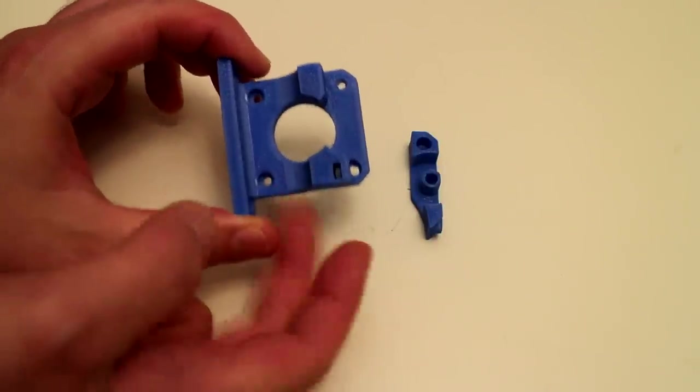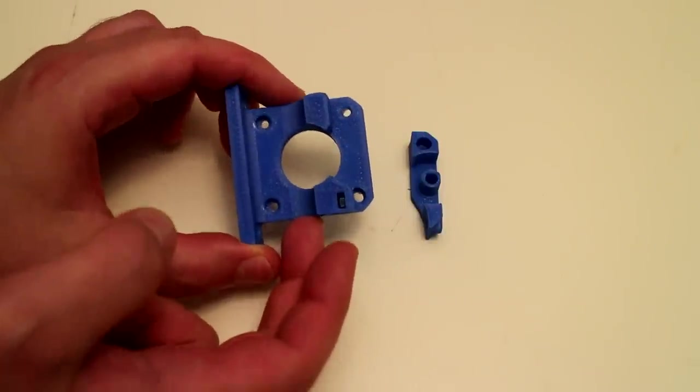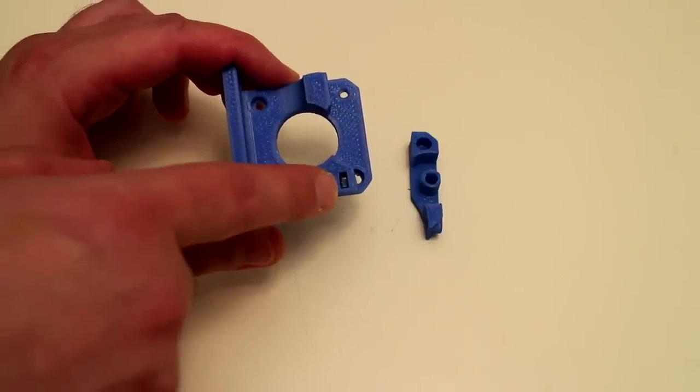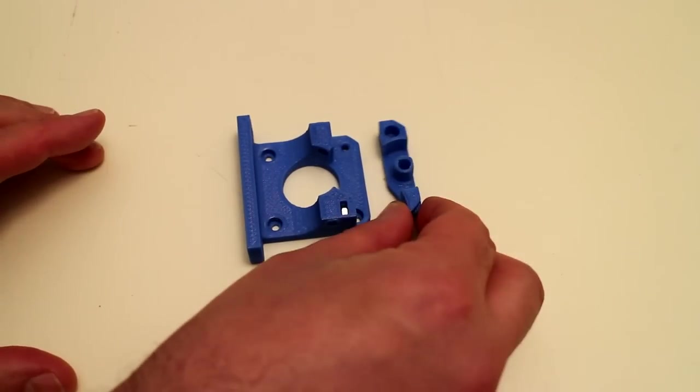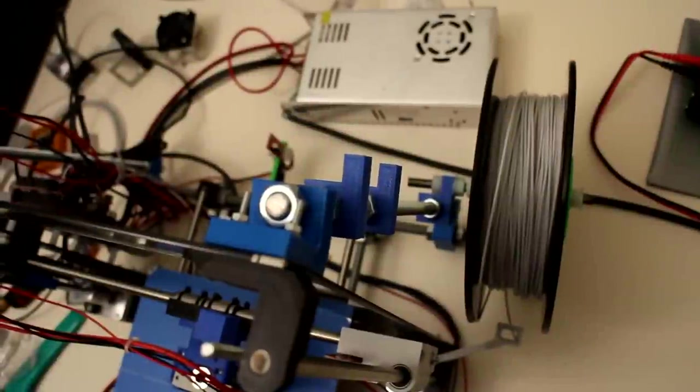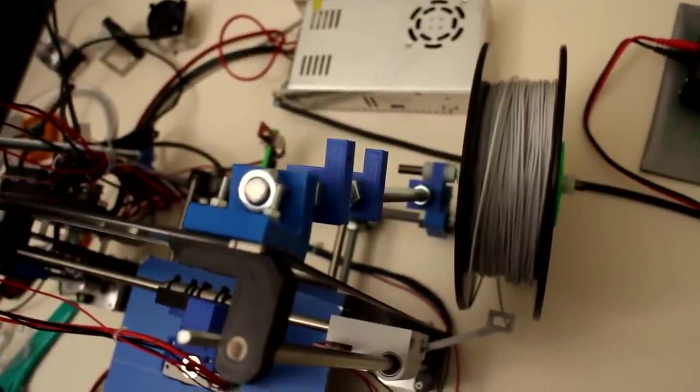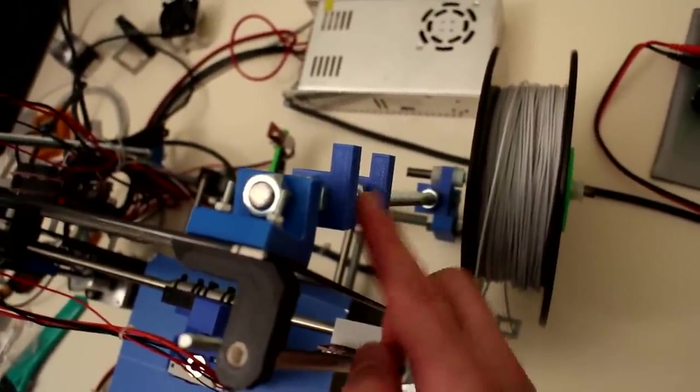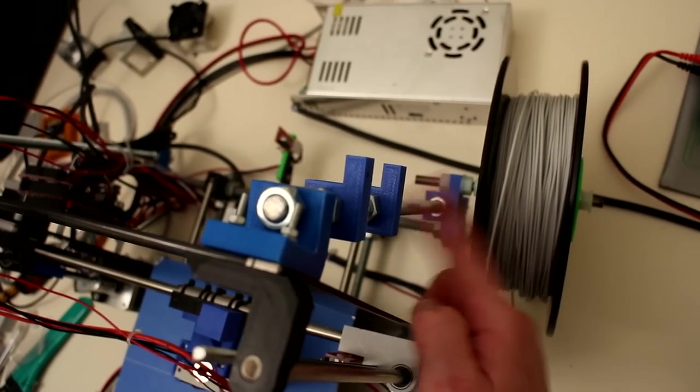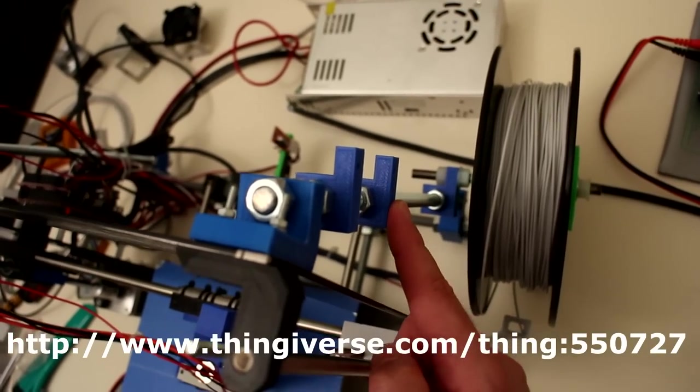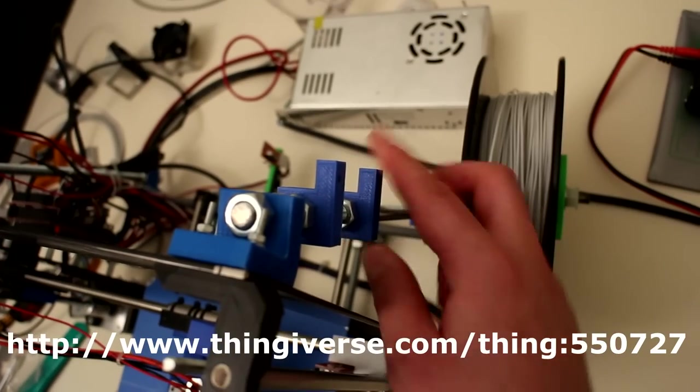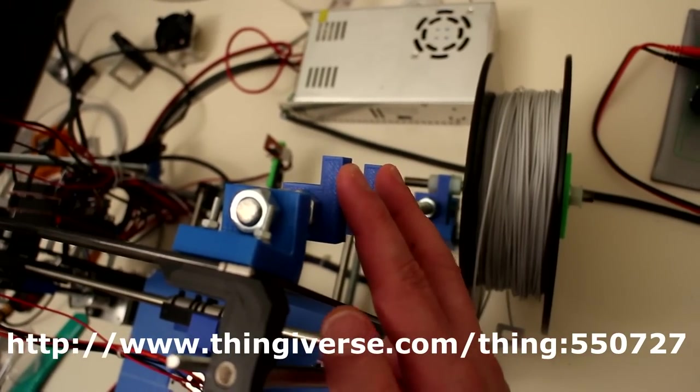Within the base of the Bowden extruder mechanism there is a nut trap. So I have an M3 nut that I've jammed down there and we also have the idler section. You'll need to mount the Bowden setup somewhere on your 3D printer. I have the Bowden setup mounted on my Z-axis threaded rod support. I've knocked up a couple of these plastic blocks. These are also available on Thingiverse to simply attach the Bowden mechanism to.